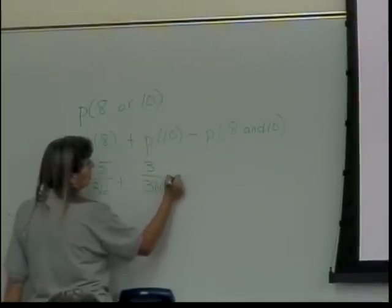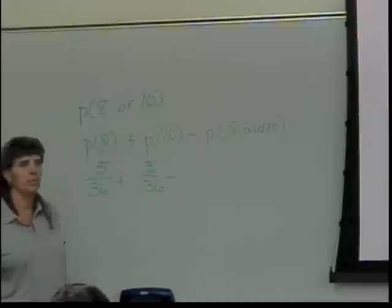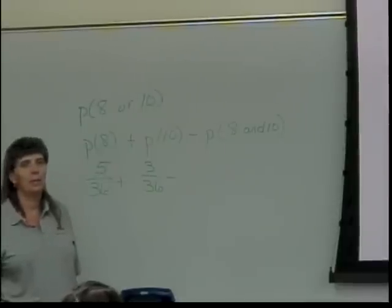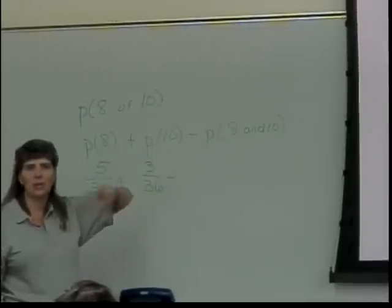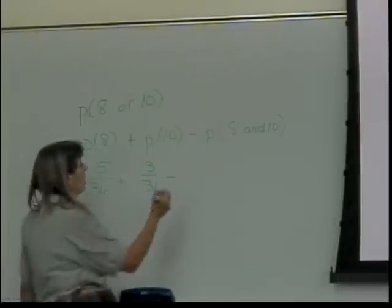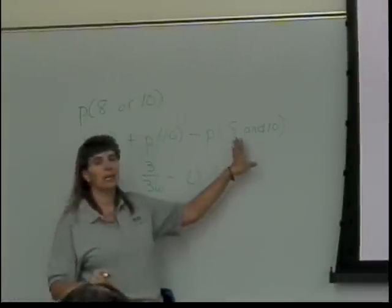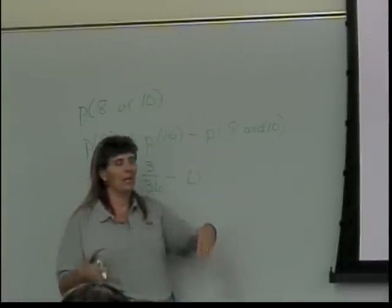What's the probability of getting an 8 and a 10 at the same time? Not happening. When I counted those things out, I didn't count anything twice.